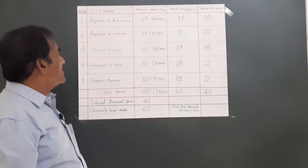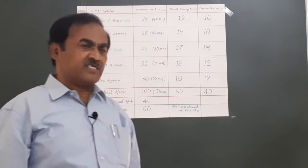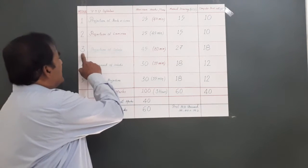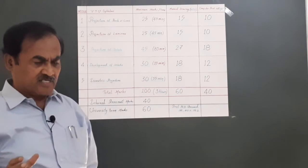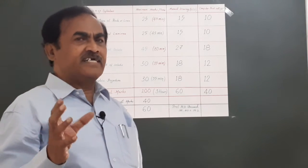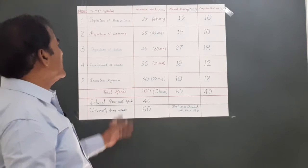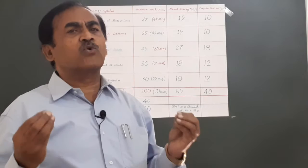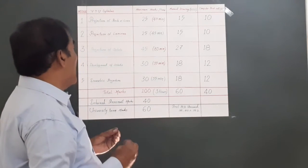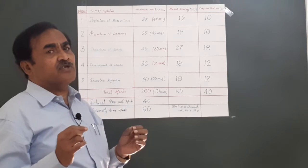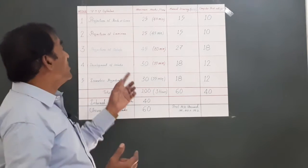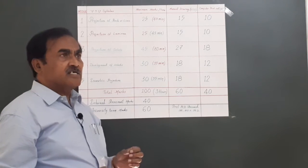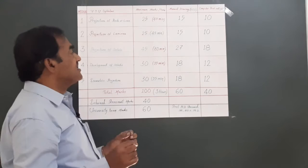The most important part of this particular subject, engineering graphics, is module 3, which deals with the projection of solids such as prisms, pyramids, cones, cylinders, spheres, etc. It carries 45 marks - almost 50 percent of the whole syllabus. One has to be extremely careful because if any student ignores this particular chapter or module on projection of solids, chances of getting good marks is just a dream.